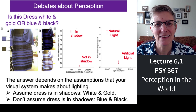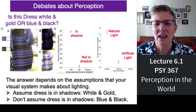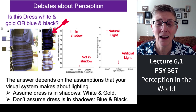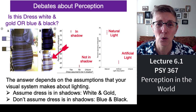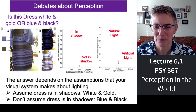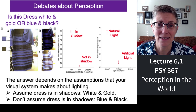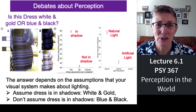Do you remember seeing this illusion a few years back? It was a picture of a dress and some people perceived the dress to be blue and black, and other people perceived the dress to be white and gold, and it looked like magic. This is actually a great example of how context shapes perception.